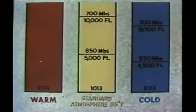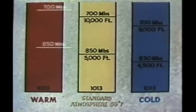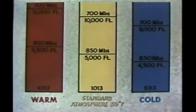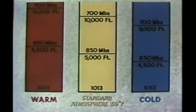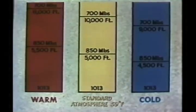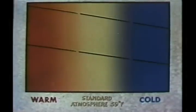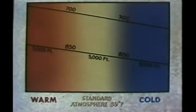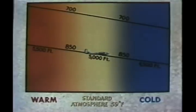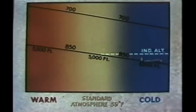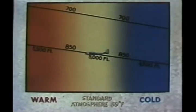In warm air, the density of the air is decreased and the isobaric surfaces are higher, thus the vertical pressure gradient is decreased. Because of this variation in the vertical pressure gradient, there is an error in aircraft altimeters called temperature error. Correctly set, the altimeter only indicates true altitude when the vertical temperature and pressure distribution are standard. In air colder than standard, the aircraft is lower than the indicated altitude. In warm air, the aircraft is higher than the indicated altitude.